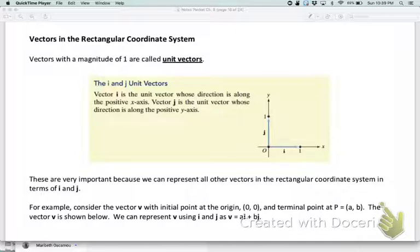We can represent all other vectors in terms of i and j. If I always start at the origin, because remember what's unique about vectors is in order for them to be equal, they only need to have the same direction and the same magnitude. They do not have to have the same location.